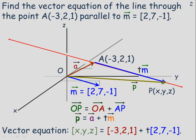This gives us the vector equation of the line. Vector p equals vector a plus tm — since vector p goes from the origin to point x, y, z, it's the vector [x, y, z]. The square brackets represent the vector; the round brackets represent coordinates of a point. Little a is the vector negative 3, 2, 1, and tm is t times the vector 2, 7, negative 1. This is a possible vector equation of this line. If you substitute t equals 0, you get the point negative 3, 2, 1, which we already know is on the line.